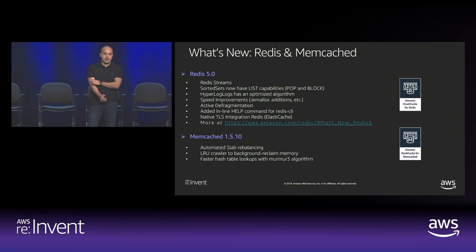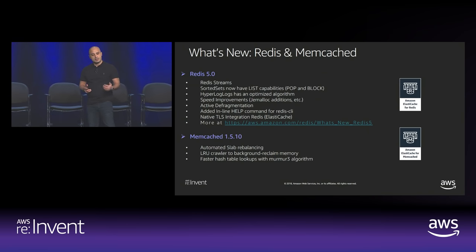Memcached 1.5.10 is also out, supported with ElastiCache. Between both of these engines, there are a lot of optimizations and enhancements to algorithms. I'm not going to have time to dive into each one, but please let me know if you have questions afterward.